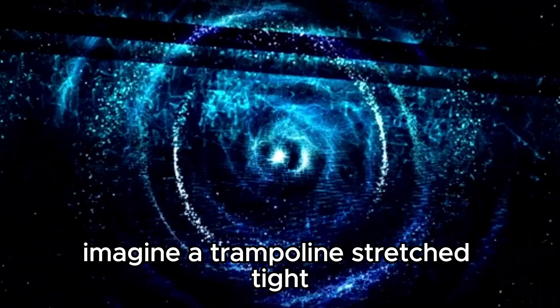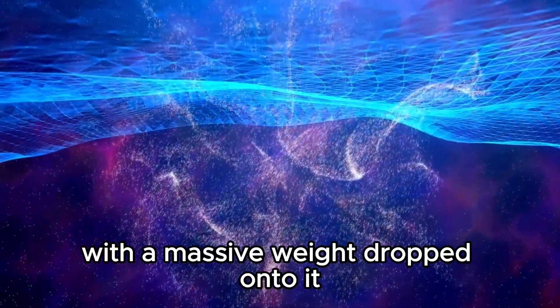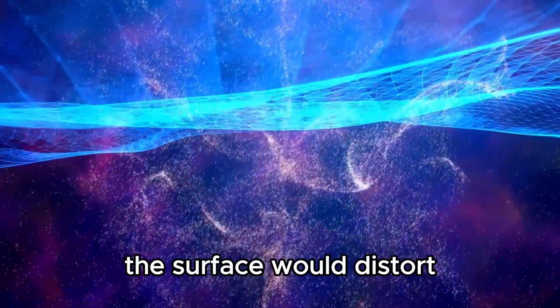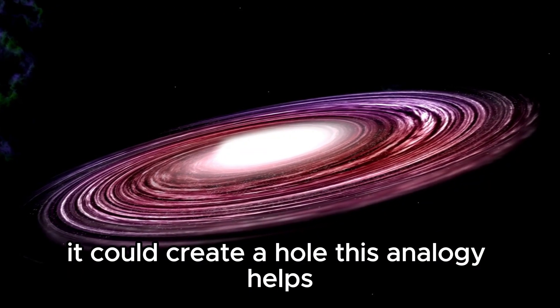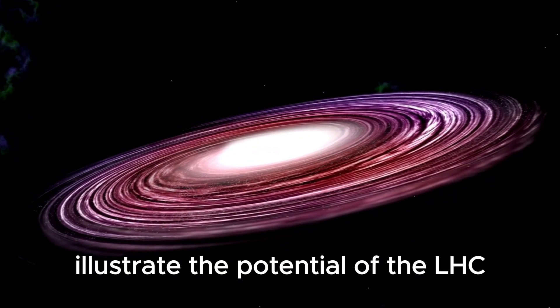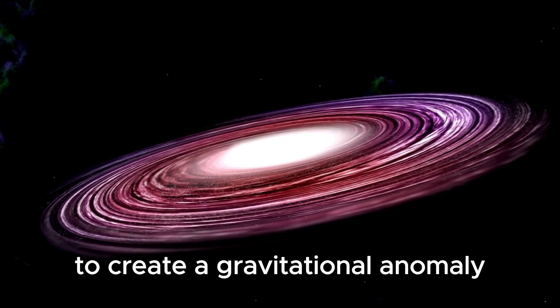Imagine a trampoline stretched tight with a massive weight dropped onto it. The surface would distort, and if the weight were substantial enough, it could create a hole. This analogy helps illustrate the potential of the LHC to create a gravitational anomaly.